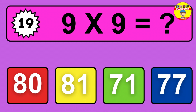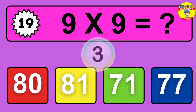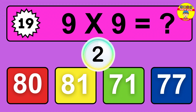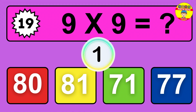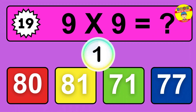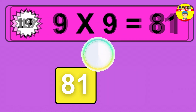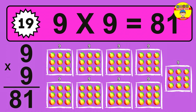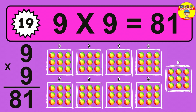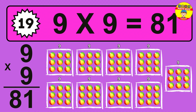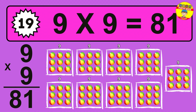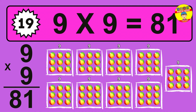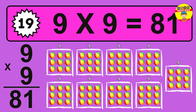Question 19. 9 times 9 equals what? The answer is 9 times 9 is 81. To calculate, we have 9 groups with 9 balls each one. So how many balls do we have? 81 balls.